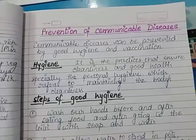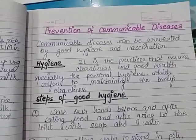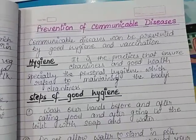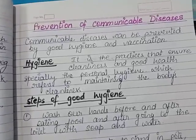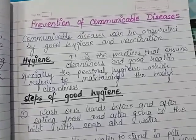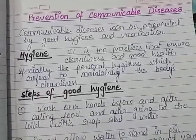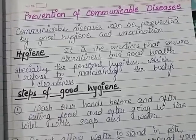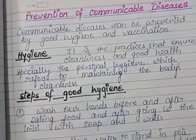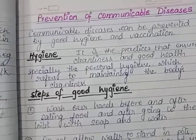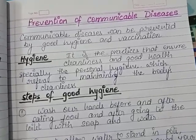Good morning children. Today I'm here with a new topic from Chapter 2 in Science: Prevention of Communicable Diseases. In our previous videos we have learned about different food groups, components of food, different nutrients and their sources, the relationship between food and health, kinds of diseases, and communicable and non-communicable diseases.